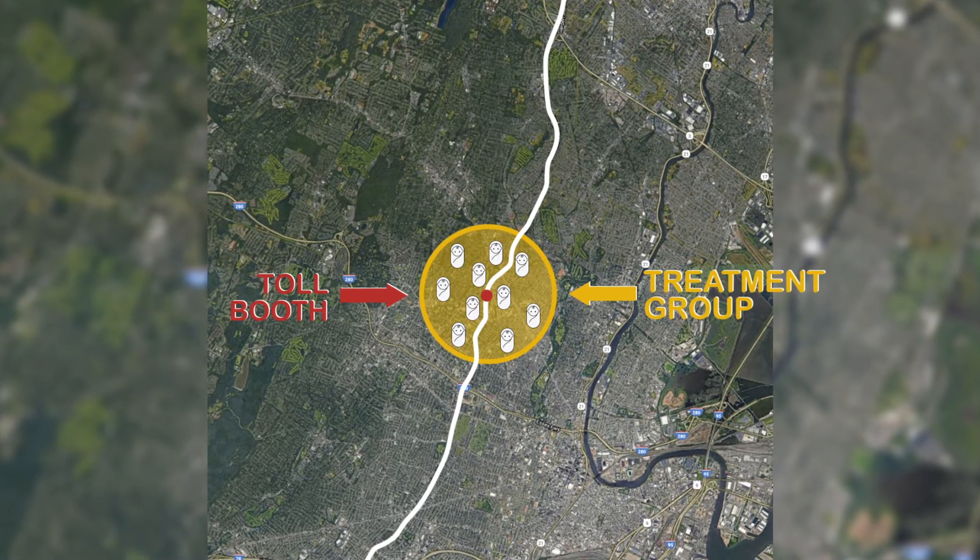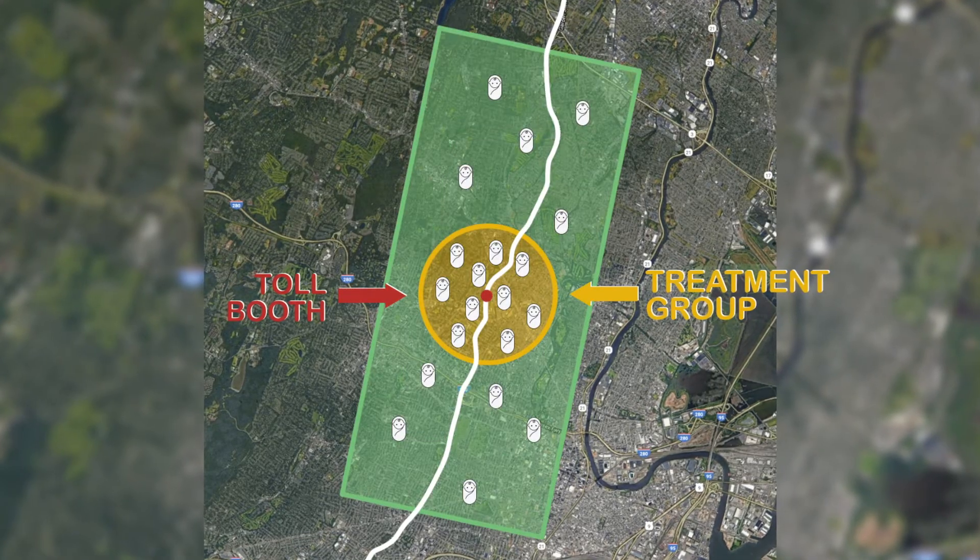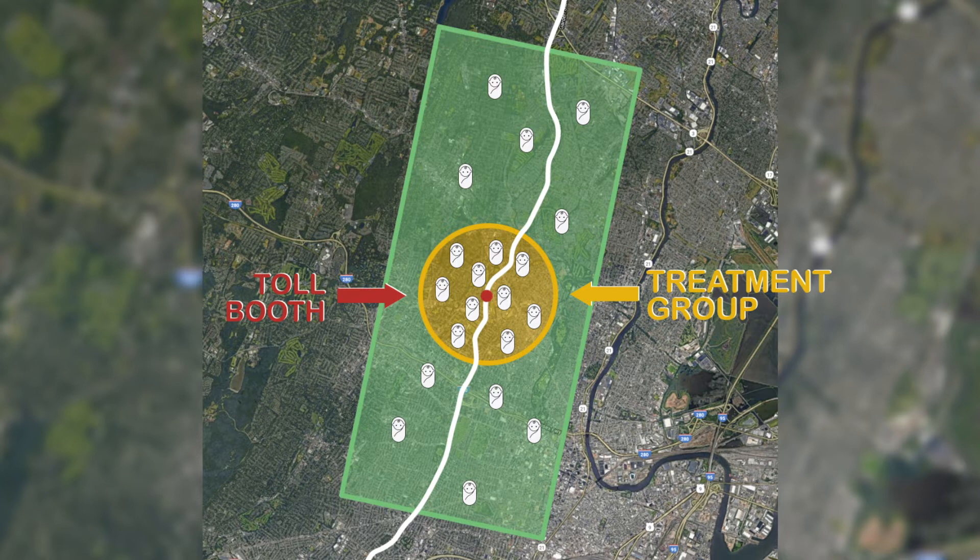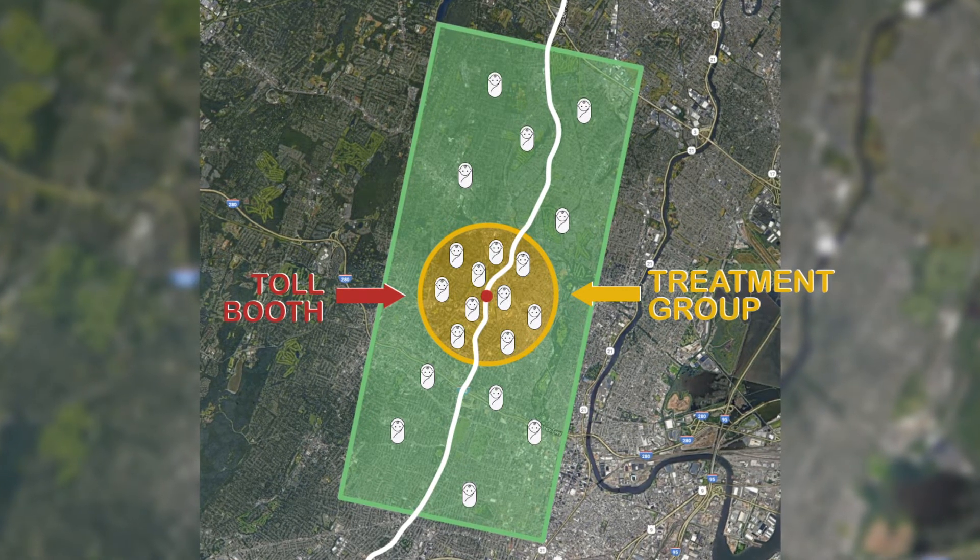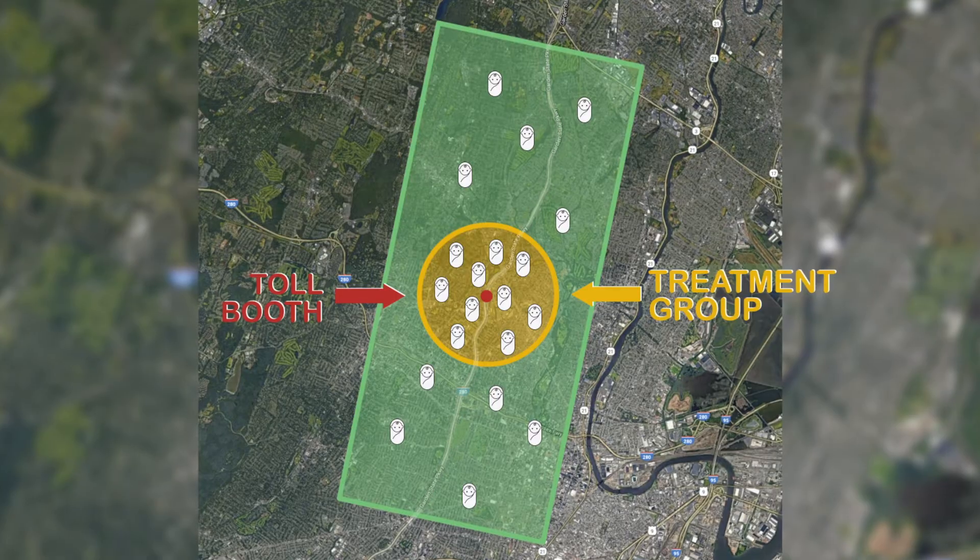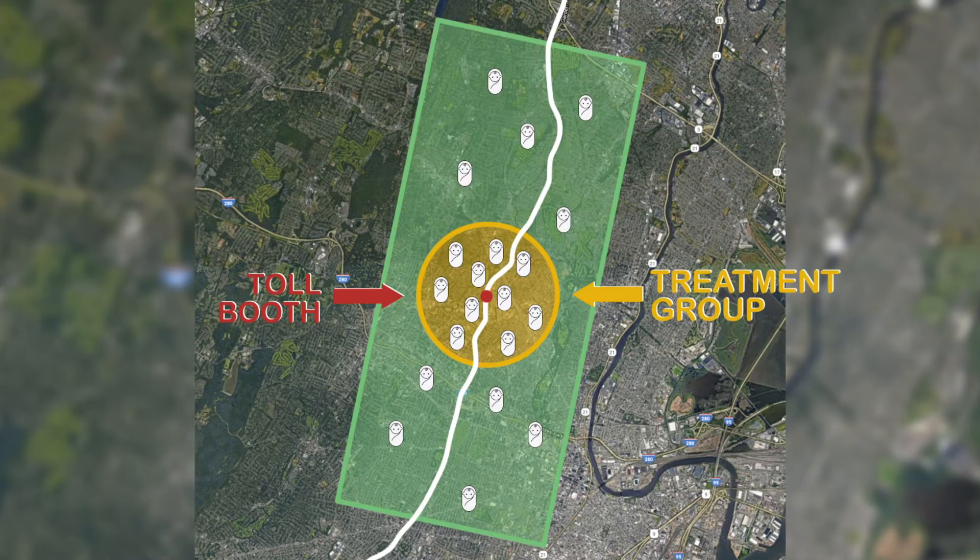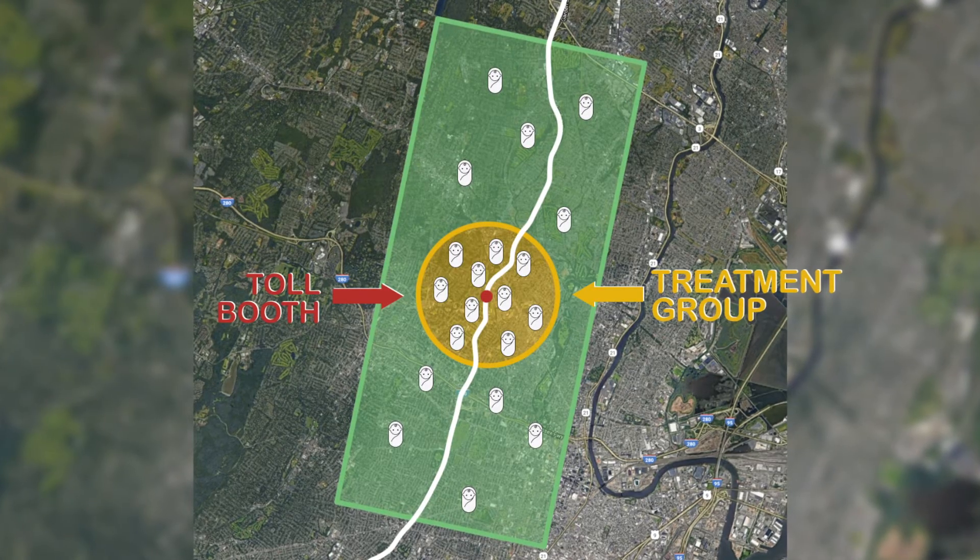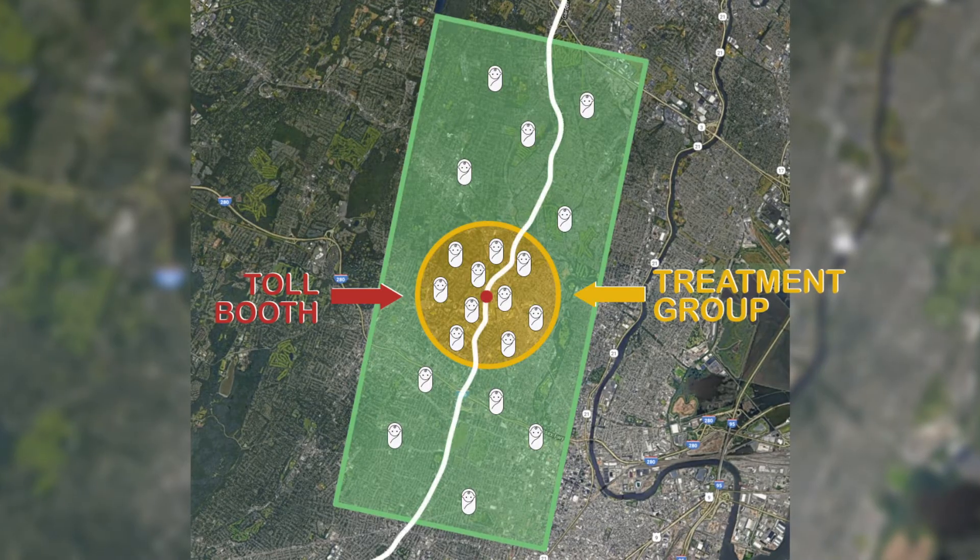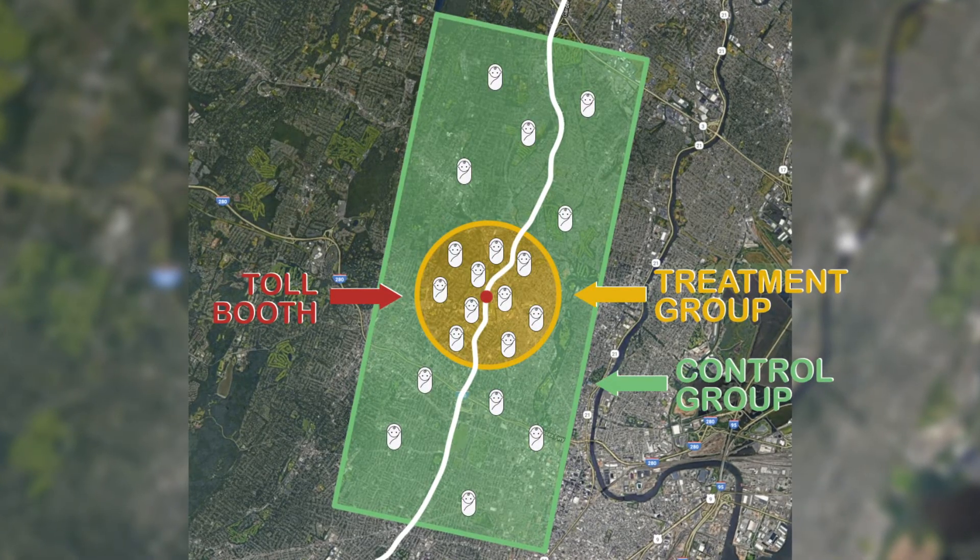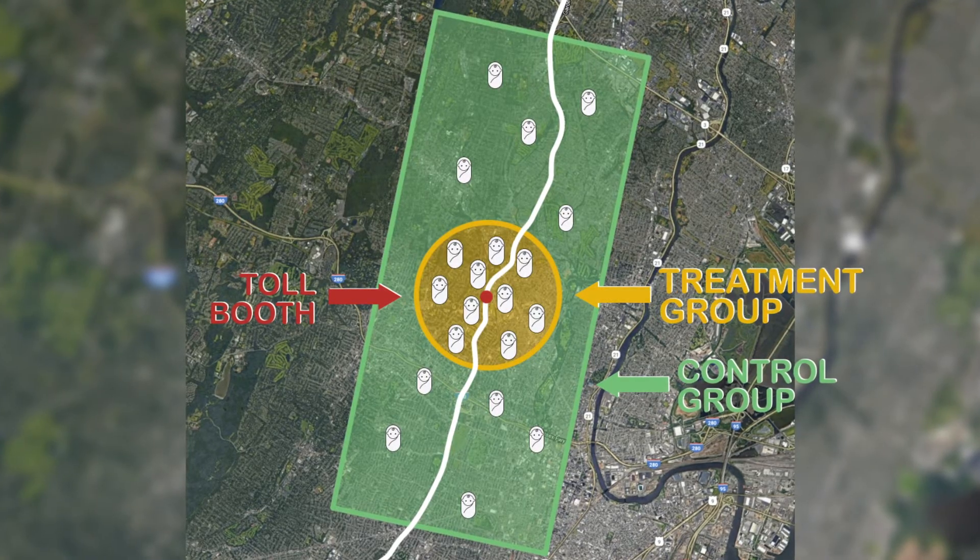So to control for these other factors, Currie and Walker found a group of infants who were born more than 2 kilometers away from the tollbooth, but less than 10 kilometers away, and within 3 kilometers of a major highway. Now these infants, they don't live near enough to the tollbooth to be affected by the change in pollution. But they do live near enough to the tollbooth and a major highway to form a good control group, a group that is likely to have similar dynamics to the treatment group.